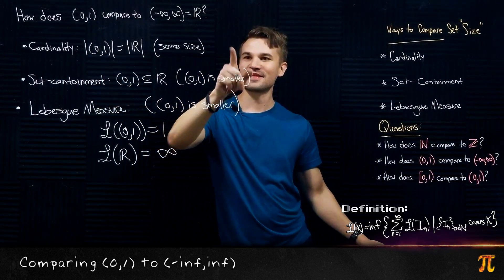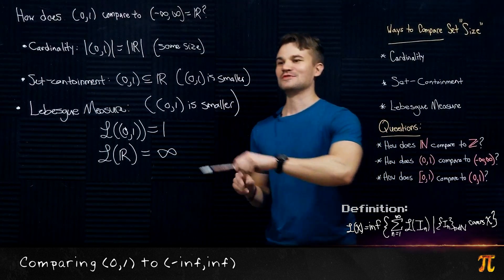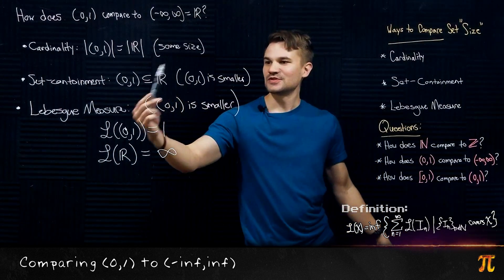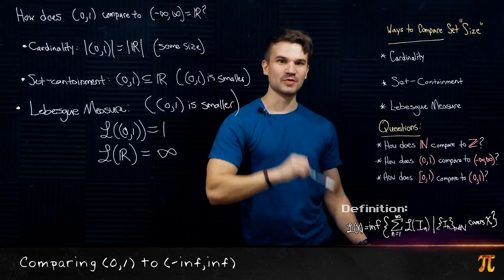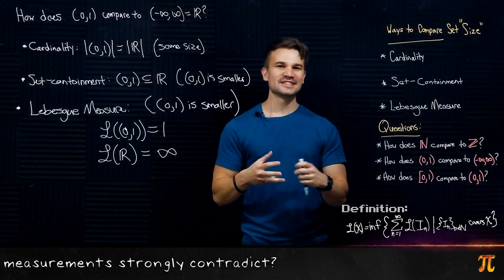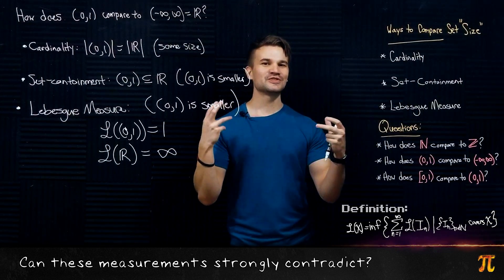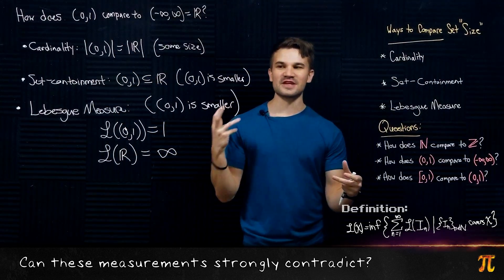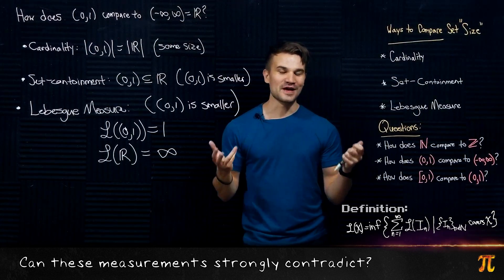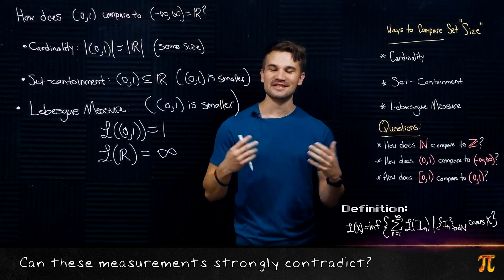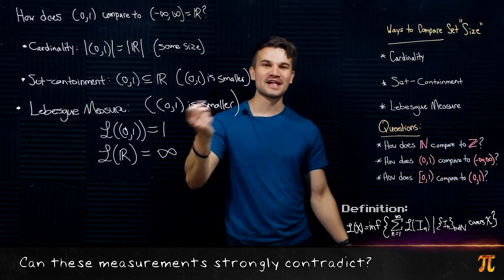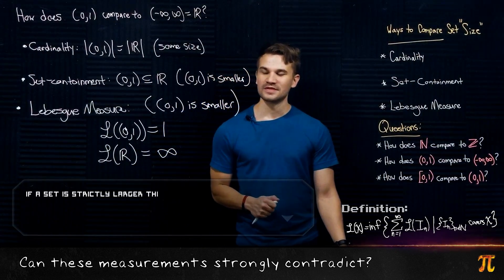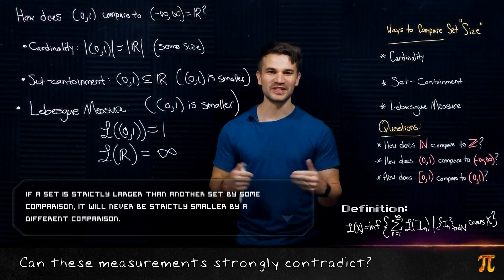To recap: with respect to cardinality they are the same size; with respect to set containment, the open interval (0,1) is smaller; and with respect to Lebesgue measure, the open interval (0,1) is again smaller. A good question is: can it ever happen that A is bigger than B with respect to one notion but B is bigger than A with respect to another? The answer is no. If A is a subset of B, then the cardinality of A is less than or equal to the cardinality of B, and the Lebesgue measure of A can't be larger than that of B.